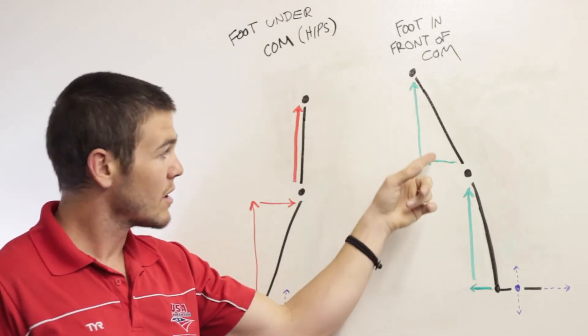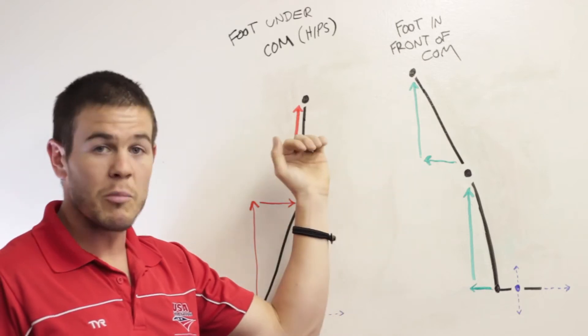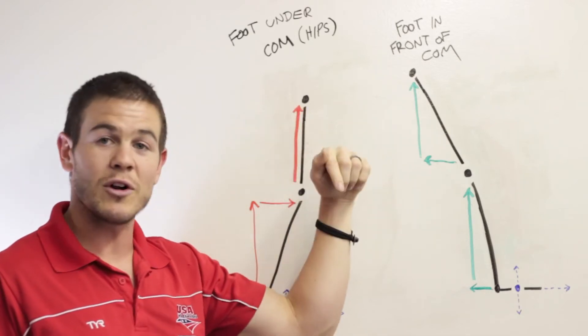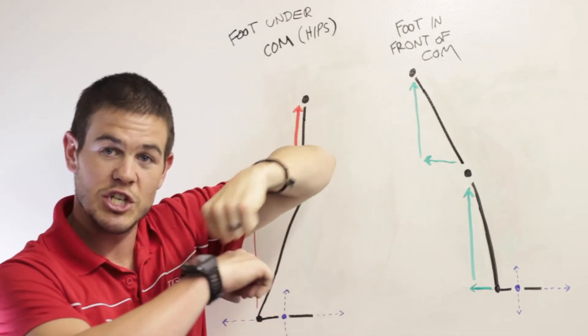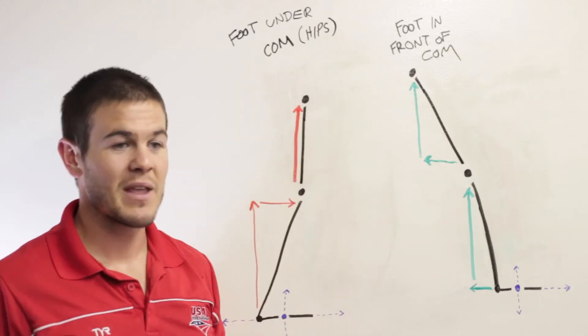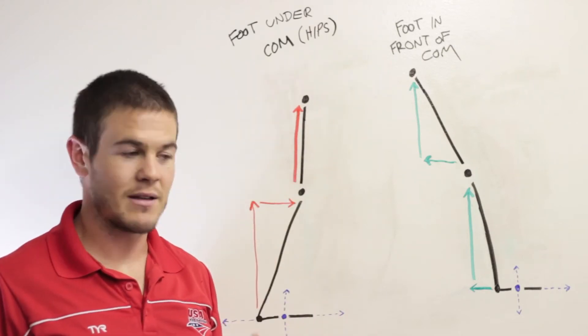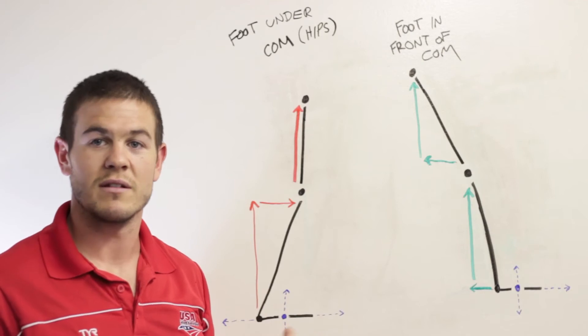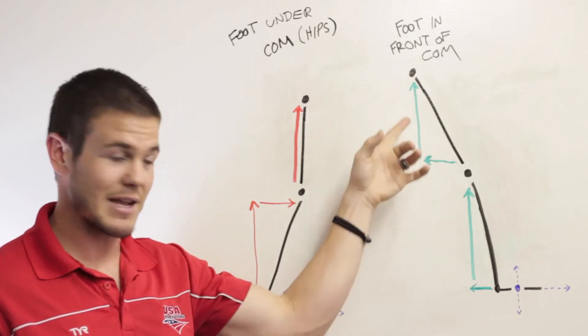So when this lower leg is now moving upward and backwards, this upper leg, the femur, is now moving, still moving downward and forward. So then you get the shearing motion at the knee joint. And that's where a lot of the pain and injuries come with this type of foot contact position.